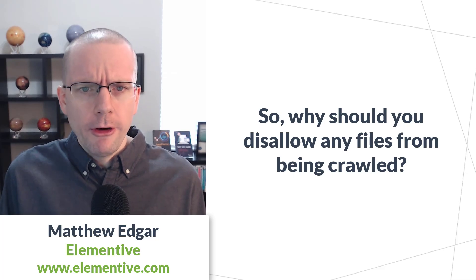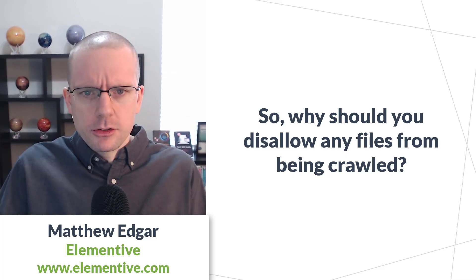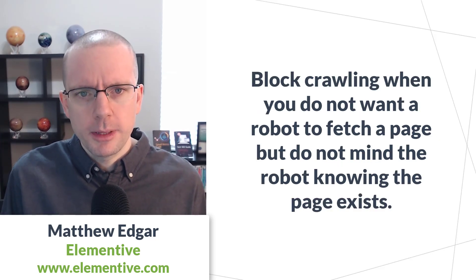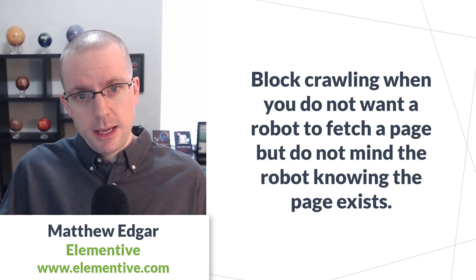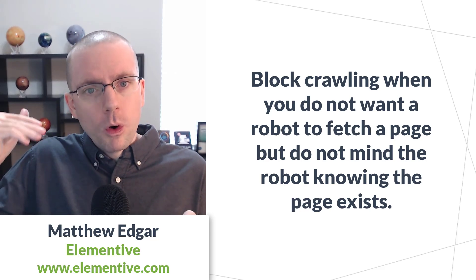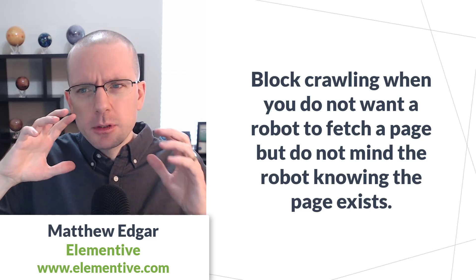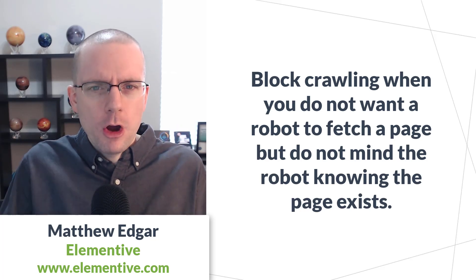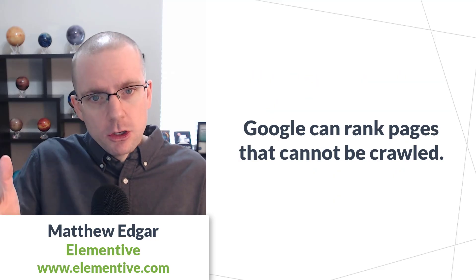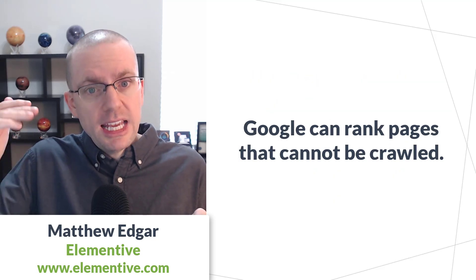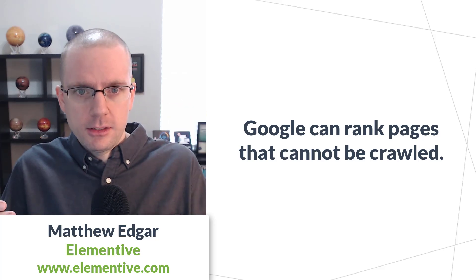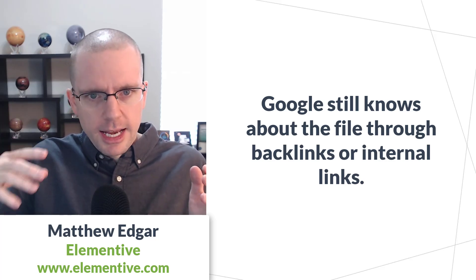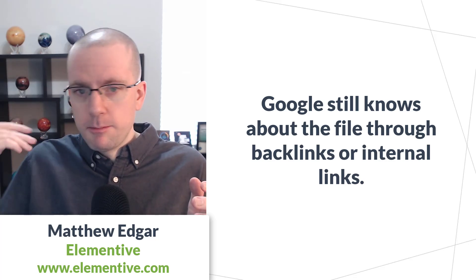Now we know what disallow statements do, how to target certain robots, and how to make exceptions. But why would you disallow anything in the first place? A disallow statement is great to use when you want to prevent Google or another bot from fetching content on your page, but you don't really care if those robots know that the file existed. In Google's case, they will sometimes index and rank pages that are disallowed, because Google still knows about that URL and has seen backlinks or internal links pointing to it.